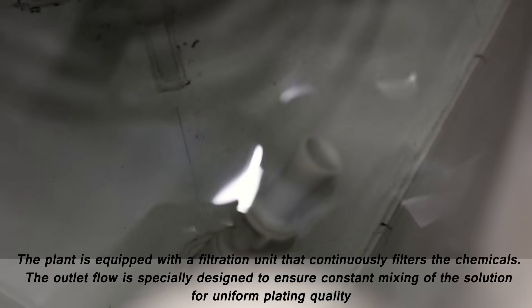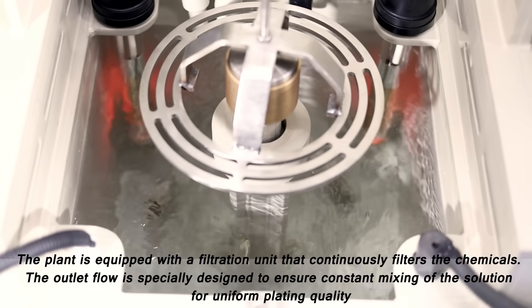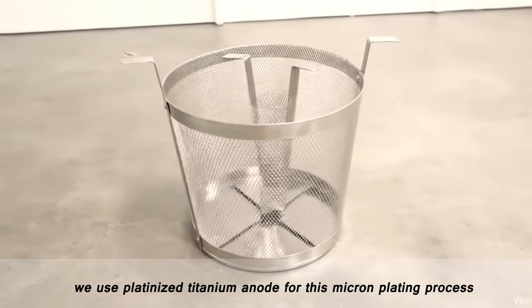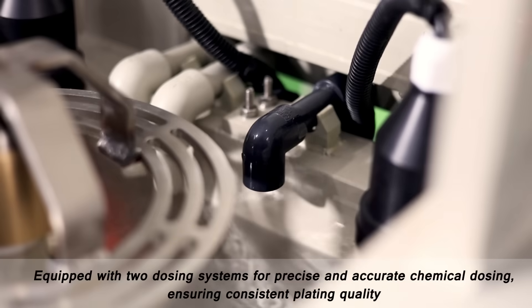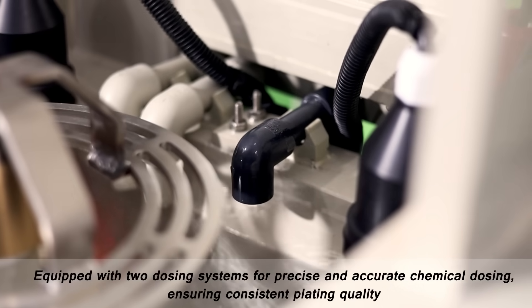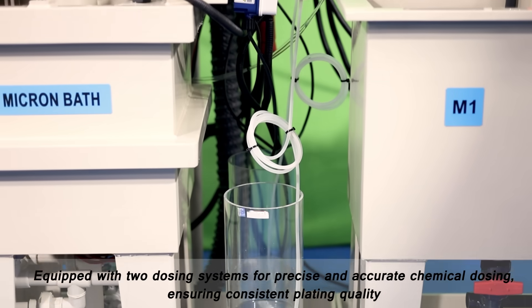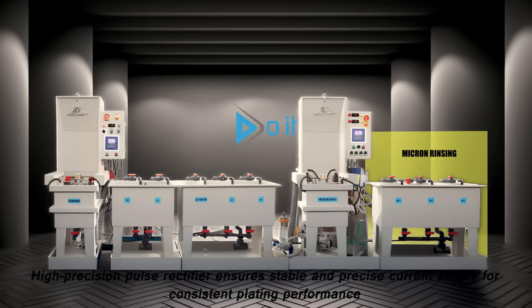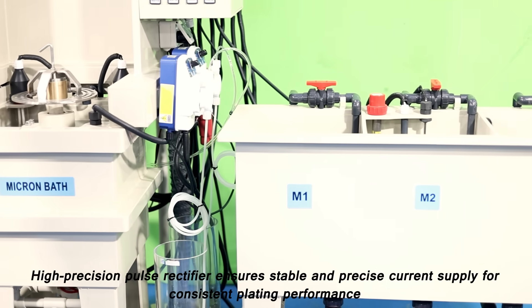The outlet flow is specially designed to ensure constant mixing of the solution for uniform plating quality. We use platinized titanium anodes for this micron plating process, equipped with two dosing systems for precise and accurate chemical dosing, ensuring consistent plating quality. High-quality DC rectifiers ensure stable and precise current supply for consistent plating performance.